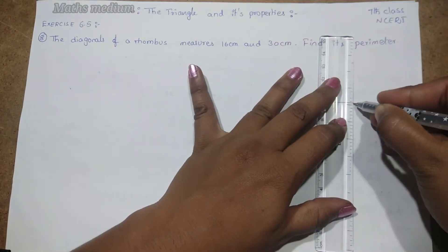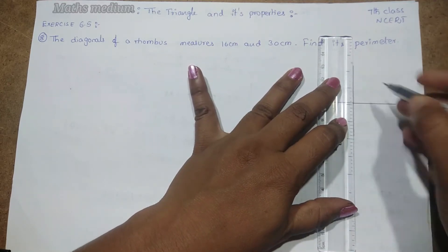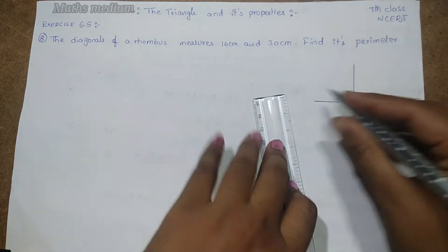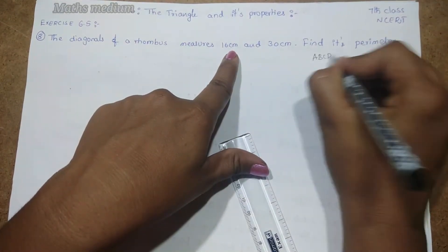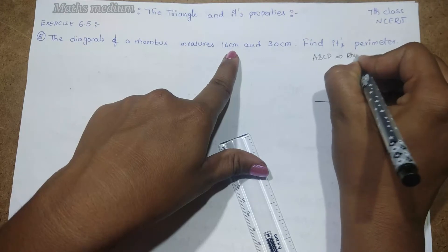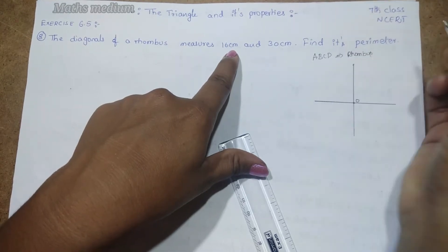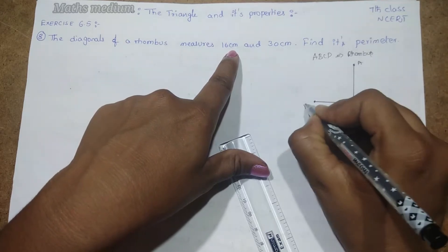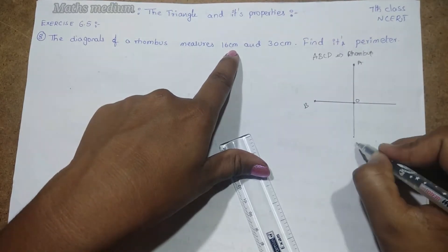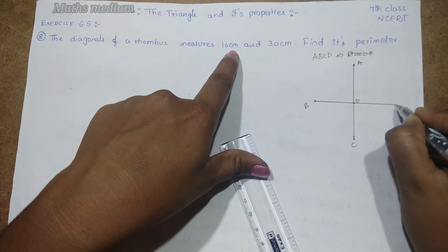Let it be our assumption. This is the point of intersection O. It is 16 cm. Let it be ABCD rhombus. For better understanding, this is A, this is B, this is C, and this is D.